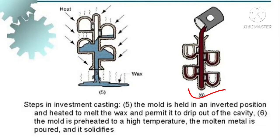The sixth step is that when the casting is cooled sufficiently, we fill it with the desired metal to make the product. For example, if we need to make jewelry, we fill the slurry pattern with the appropriate metal. After it cools down, we remove the final cast product.